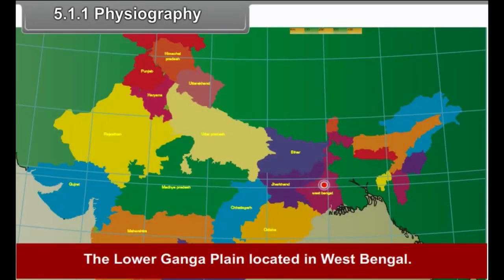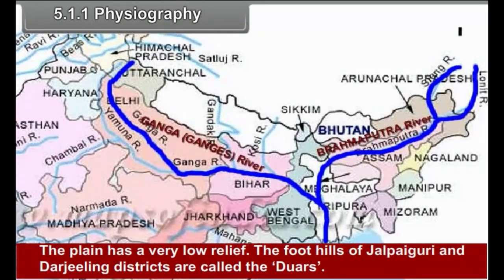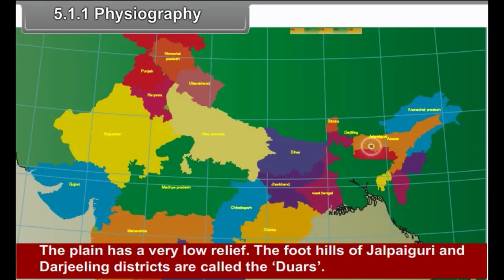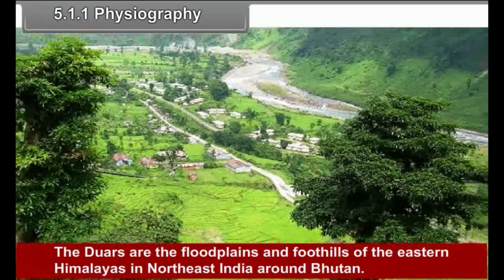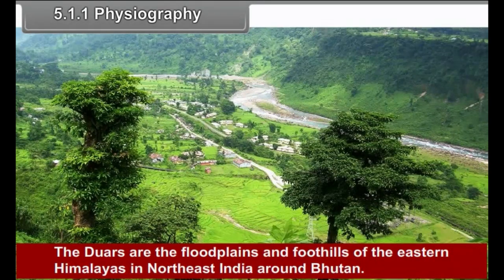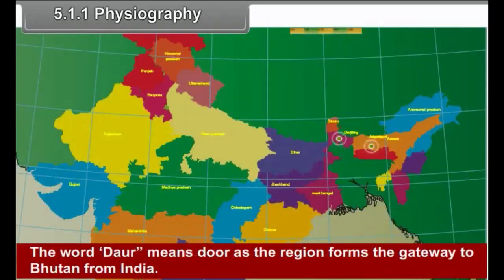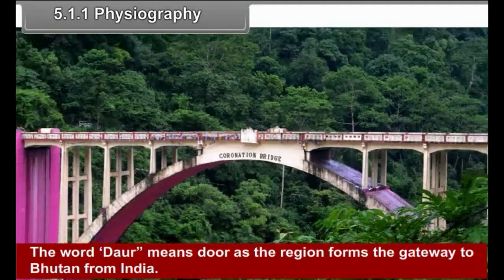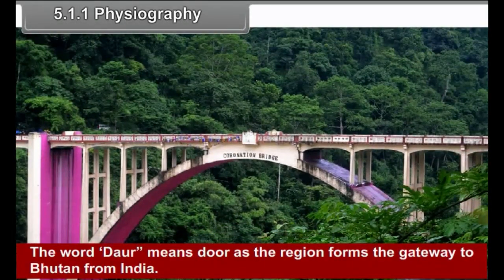The lower Ganga Plain is located in West Bengal. The plain has a very low relief. The foothills of Jalpaiguri and Darjeeling districts are called the Dwars. The Dwars are the flat plains and foothills of the eastern Himalayas in northeast India around Bhutan. The word Dwars means 'door' as the region forms the gateway to Bhutan from India.